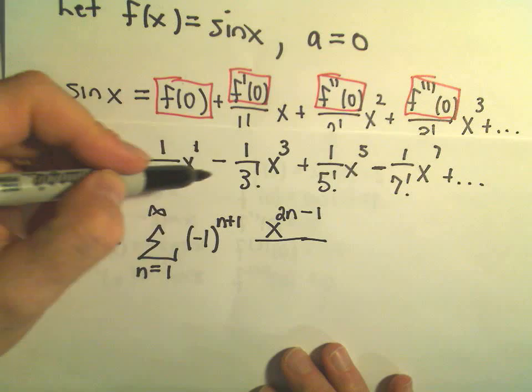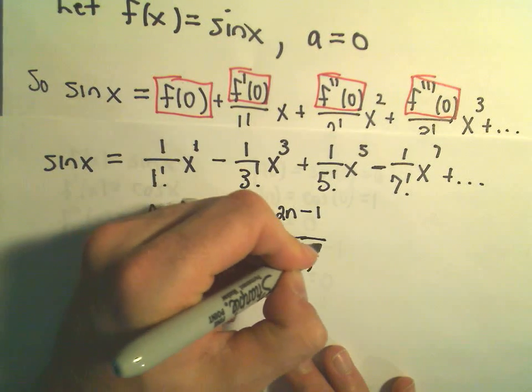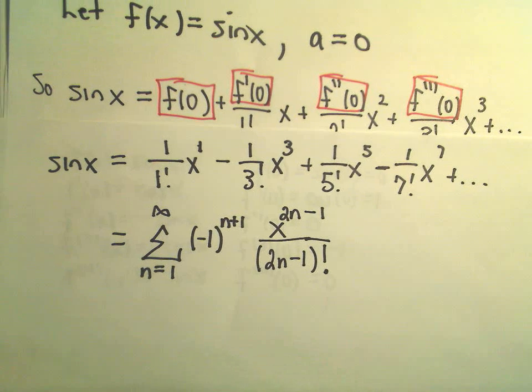And simply, whatever the exponent is, the factorial is always the same thing. So, in the denominator, I'm just going to put two n minus one factorial. And now we have got our Maclaurin series expansion for Sine x.